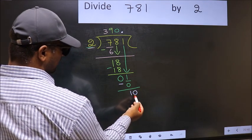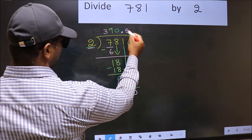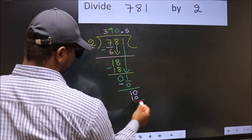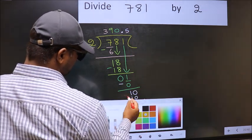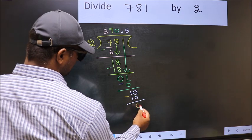So 10, when do we get 10 in 2 table? 2, 5, 10. Now you subtract. 10 minus 10, 0.